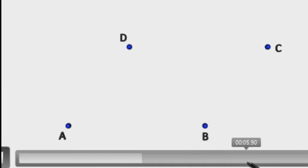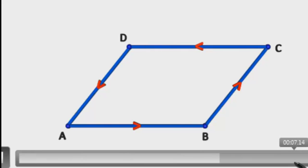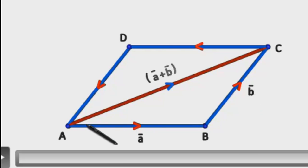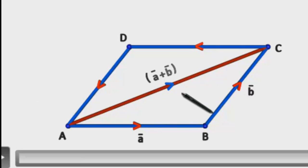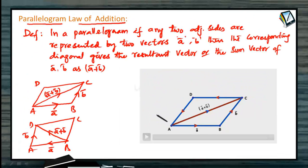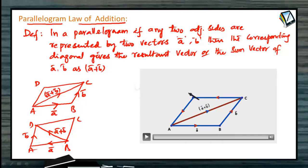For better understanding, observe the animation related to this concept. In parallelogram ABCDA, AB̄ is represented by vector Ā, BC̄ is represented by vector B̄, and the corresponding diagonal gives the resultant Ā plus B̄. The corresponding diagonal is AC̄ for AB̄ and BC̄, and the corresponding diagonal for BĀ and AD̄ is BD̄.